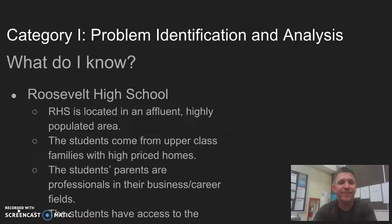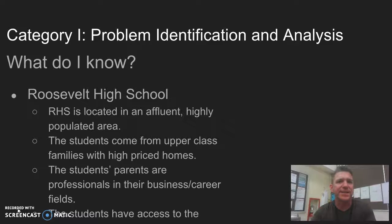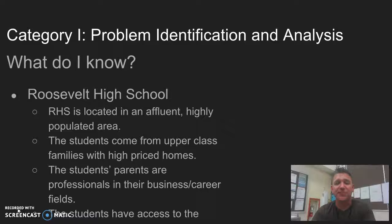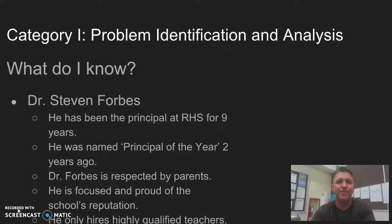Category one asks the question: what do I know? Reading through the case study, I started by listing what I know about the major components. Roosevelt High School is located in an affluent, highly populated area. The students come from upper-class families with high-priced homes. Their parents are professionals, and the students have access to the latest advances in technological equipment.